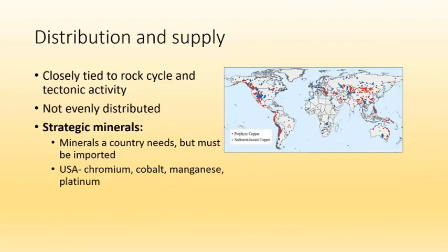The distribution and supply of mineral resources is closely related to the rock cycle and tectonic activity — it's not evenly distributed among countries. This leads to the concept of strategic minerals: minerals a country needs but must import. For the United States, our strategic minerals — those we need but don't have enough of — are chromium, cobalt, manganese, and platinum.